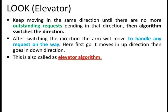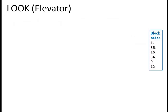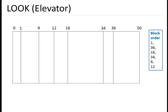Let's see an example for this algorithm — the LOOK algorithm, also called the elevator algorithm. Here is our block request order: 1, 36, 16, 34, 9, and 12. This is our cylinder representation, where cylinder numbering goes from 0 to 50, meaning there are a total of 51 cylinders.